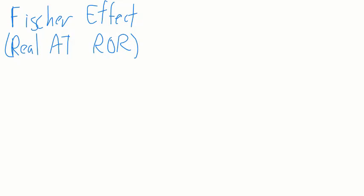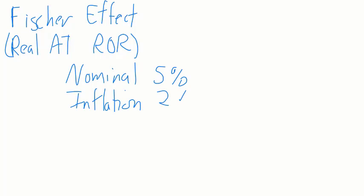Let's consider a question because it's easier when looking at a question to understand how the approximation works. Let's say that your nominal return is 5%, inflation is 2%, taxes are 36%.